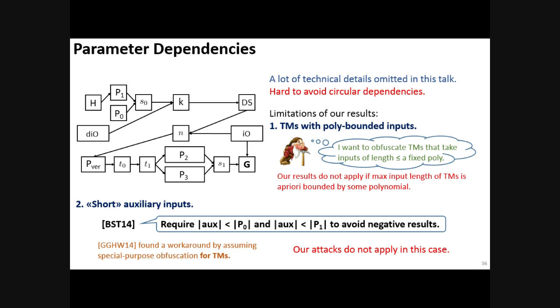So regarding constructing such a generator, we have to choose a number of parameters. A lot of technical details are omitted from this talk, and in particular, a big challenge is avoiding circular dependencies between these parameters. Most of the extensions one can attempt lead to introducing circular dependencies. Some examples of limitations that we have because of this: first, our results only apply to the most general case when you want to obfuscate Turing machines with unbounded input, whereas if you a priori bound the maximum input of Turing machines by some fixed polynomial, then our results no longer apply.